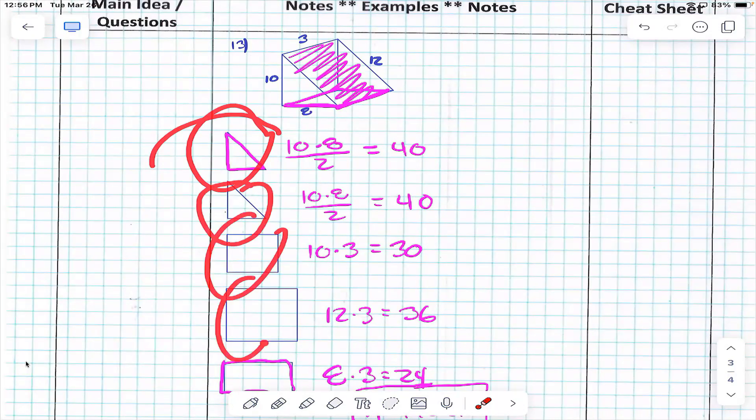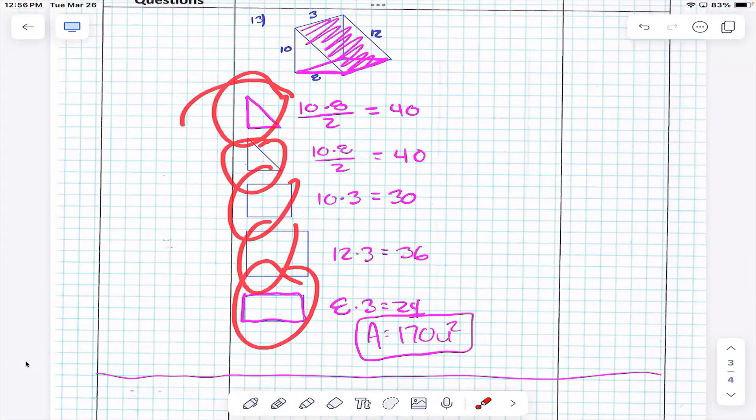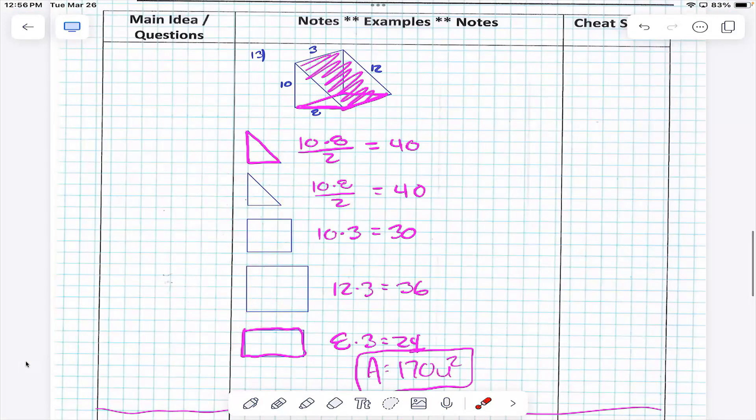One, two, three, four, and five, right? Do I need to find the area of all five of those?